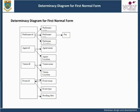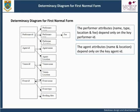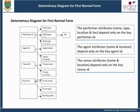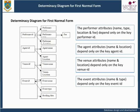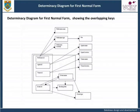The information represented in these four categories can be displayed in a single determinacy diagram for first normal form. The combined determinacy diagram for first normal form shows Performer Attributes, Agent Attributes, Venue Attributes, and Event Attributes, and that booking details depend on all four key attributes. Here is a diagram of the full determinacy for first normal form showing the overlapping keys.